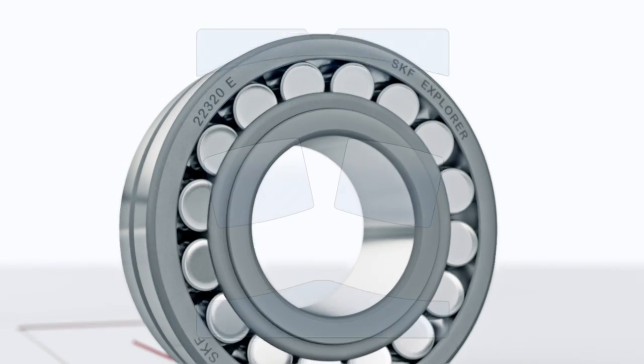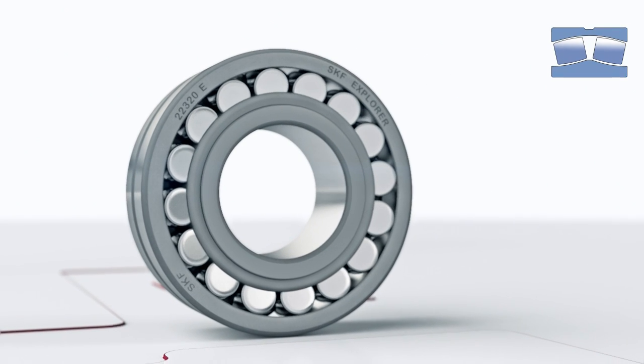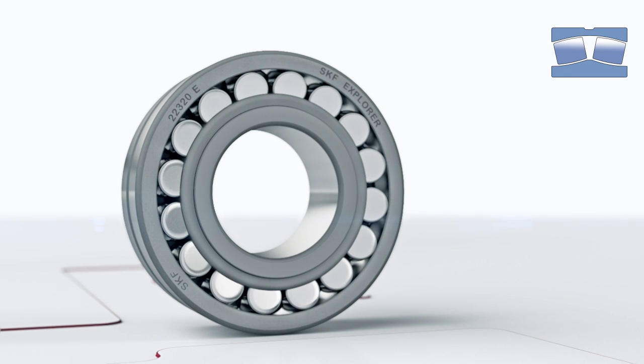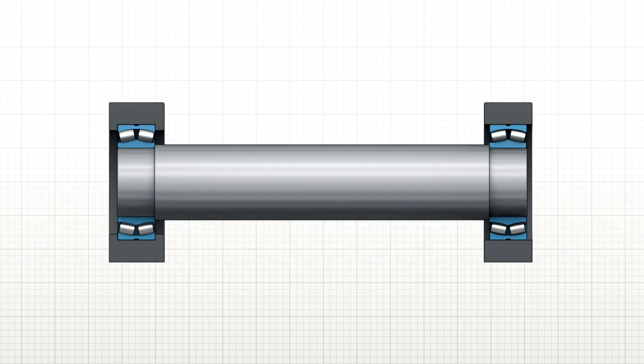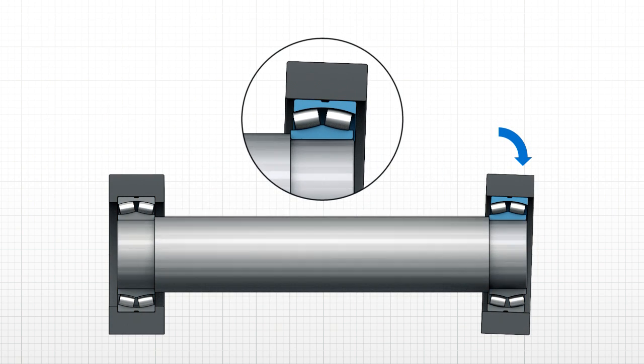To cope with this, design engineers use a conventional self-aligning bearing system consisting of two self-aligning ball or spherical roller bearings. This is a conventional self-aligning bearing system with two spherical roller bearings. They take heavy loads and accommodate misalignment.